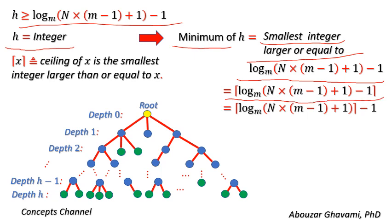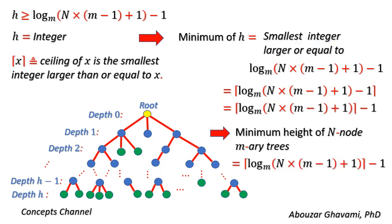Since −1 is an integer, it comes out of the ceiling function. Therefore, the minimum height of an n-node m-ary tree is ceiling(log_m(n(m − 1) + 1)) − 1, which is also the maximum lower bound for the height of an n-node m-ary tree.